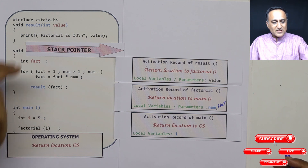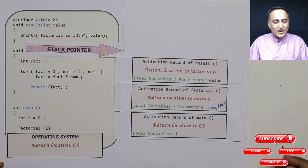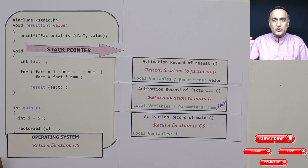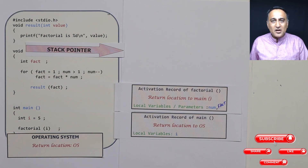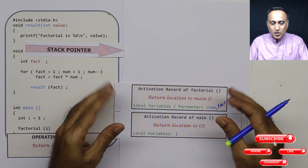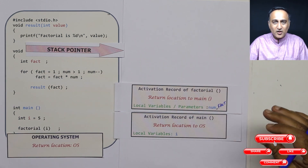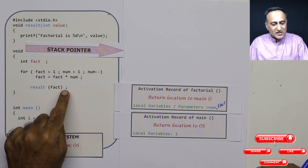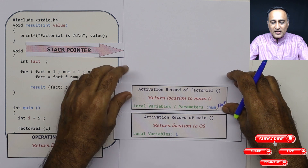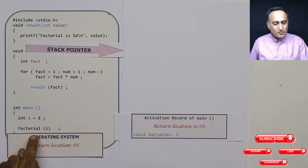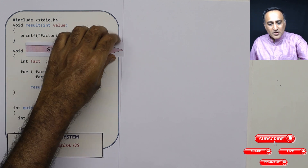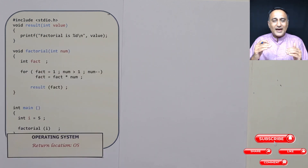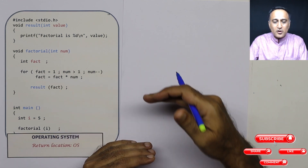Main calls factorial, factorial calls result. Once we have calculated the factorial of five as 120, we print the value. When result's function execution completes, its record is removed from the stack — this is called popping the activation record. Putting a record onto the stack is called pushing; removing it is called popping. After the result has been printed, the factorial function also ends, so the activation record of factorial is also popped. Then main finishes, and we pop its record from the stack box as well.